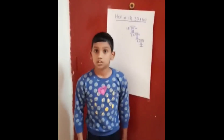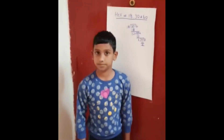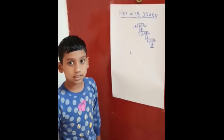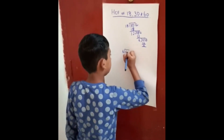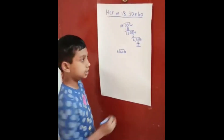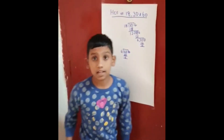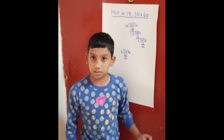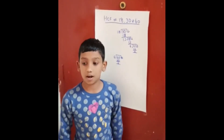Divide the greatest number by the smallest number till you get the remainder as 0. So the HCF of 18 and 30 is 6. Now we should find the HCF of 6 and 60. 6 is the divisor and 60 is the dividend. 6 tens are 60. 60 minus 60 equals 0. So the HCF of 6 and 60 is 6.